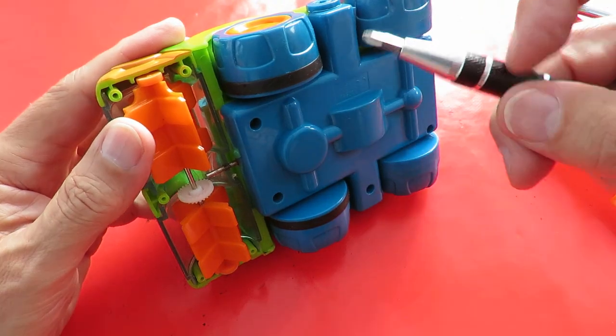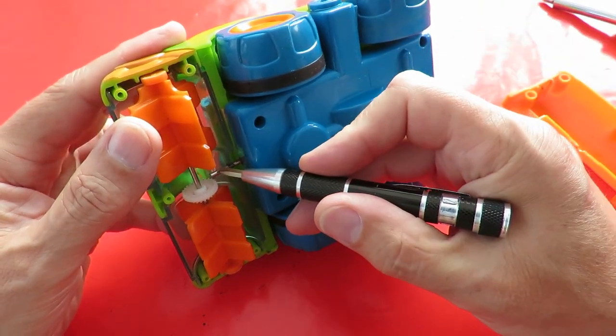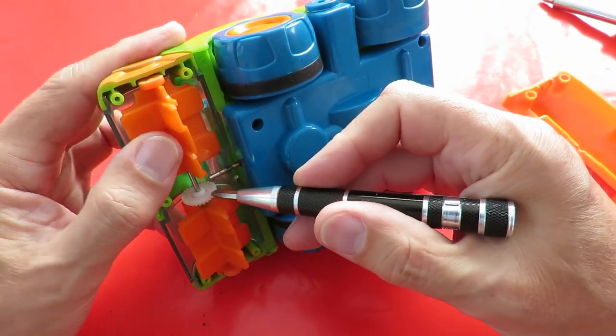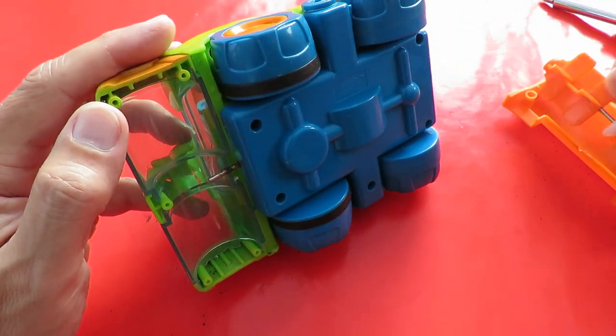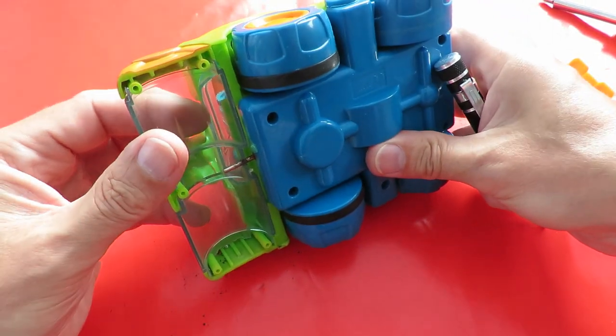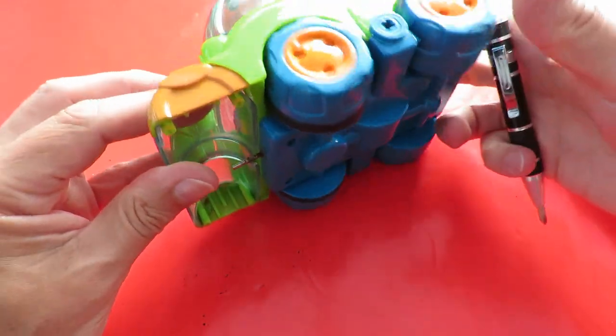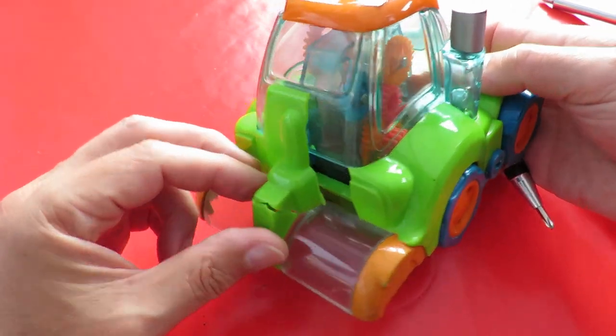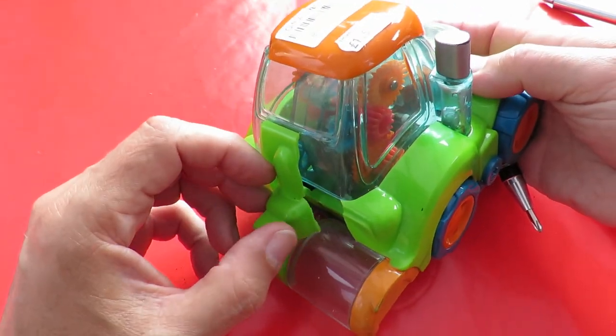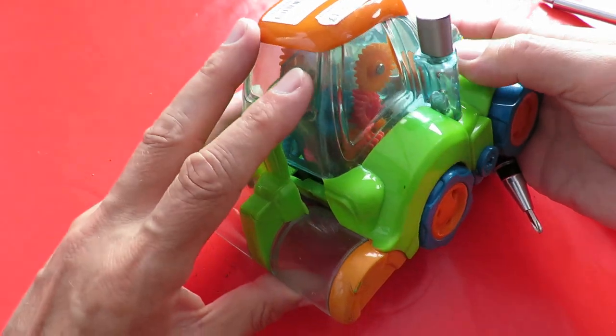So straight away we can see we're missing a gear here that would turn this bit around. That's broken just there. Might be able to glue that bit back together but we're still missing a piece here.